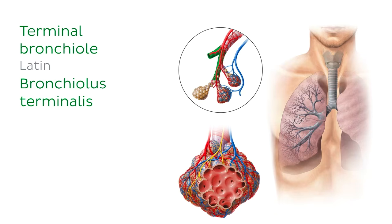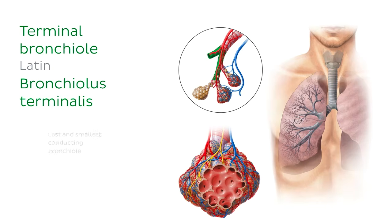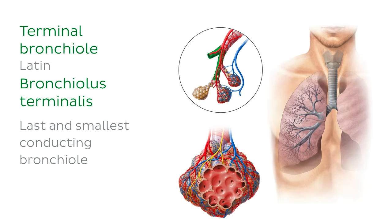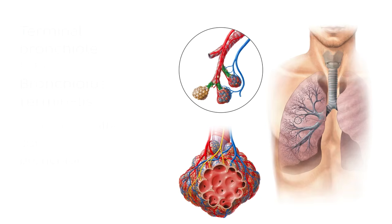Terminal bronchioles, one of which we can now see highlighted in green, are a type of conducting bronchiole. As their name suggests, they are the last and therefore smallest conducting bronchioles in the tree before we get to the alveoli. Distal to the terminal bronchioles, there are other bronchioles that have some sacs on them — but these are no longer conducting bronchioles.